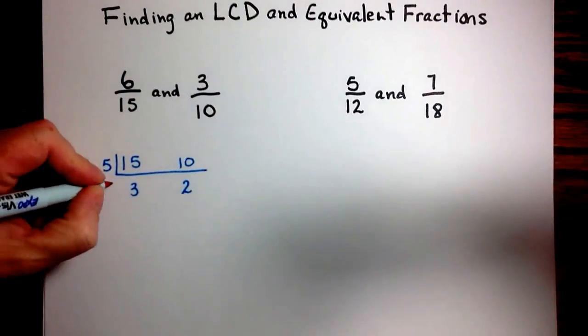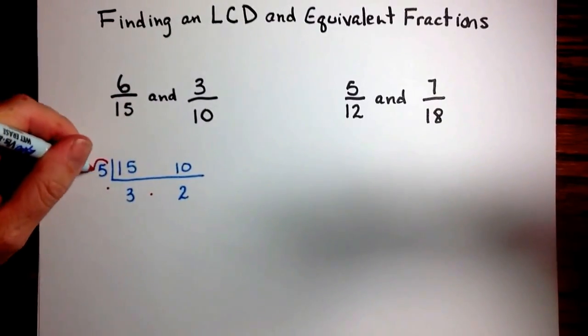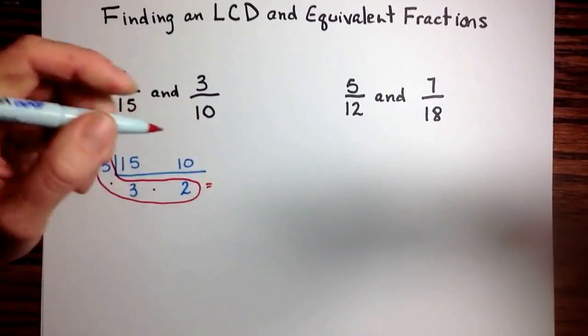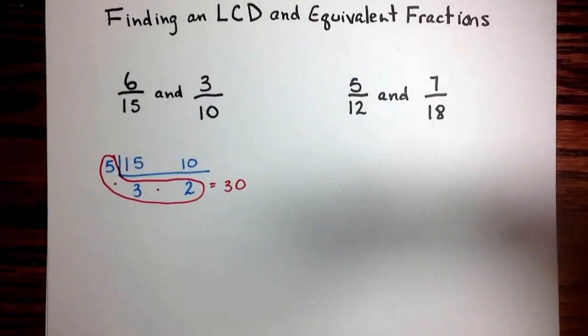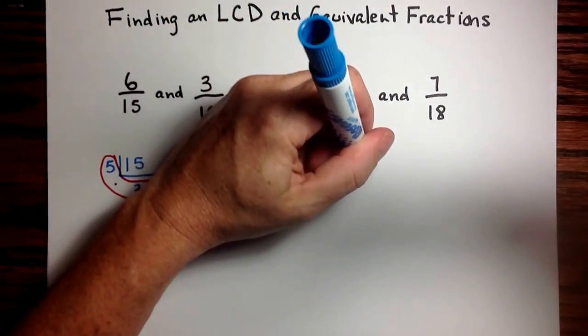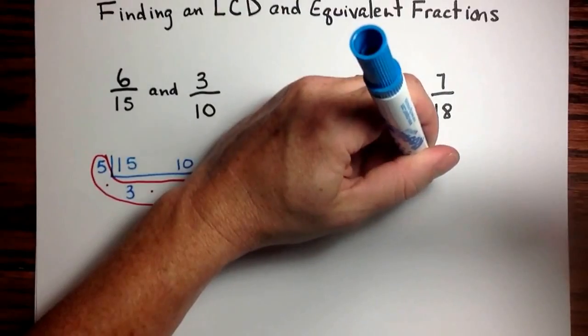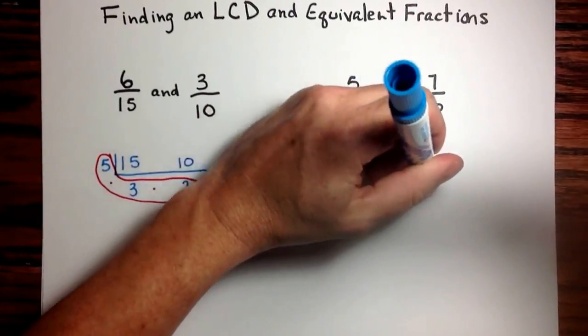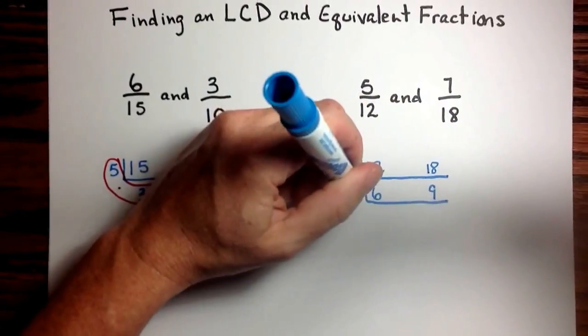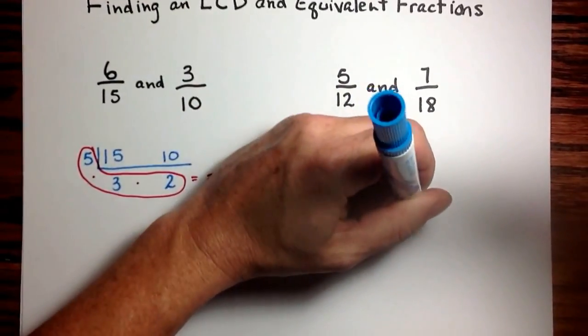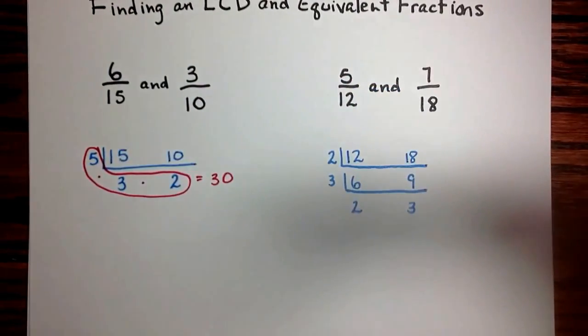So for 15 and 10, that least common denominator will be 30. And for 12 and 18, that least common denominator will be 36.